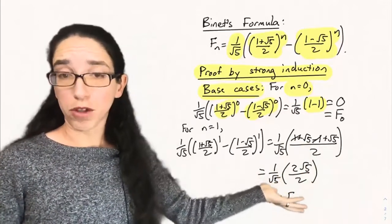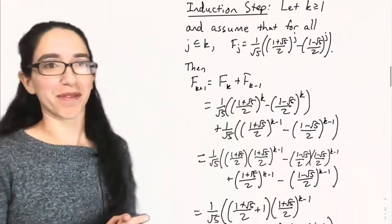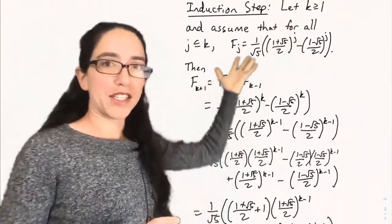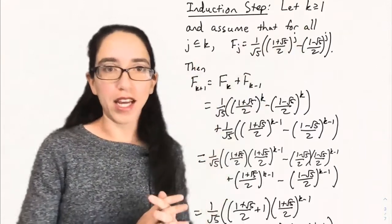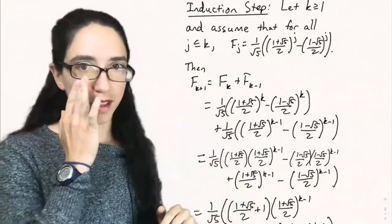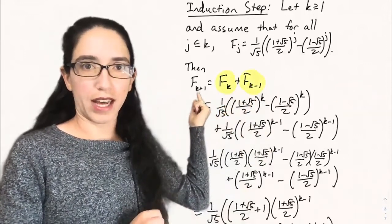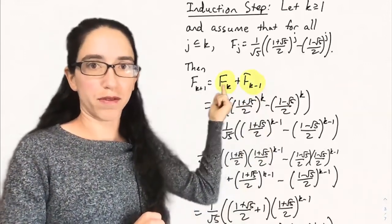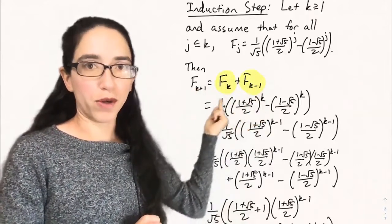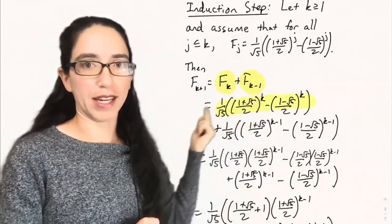So we see the √5s do actually cancel and we get an integer. So why does this hold in general? Let's do the induction step. Now that we have these two base cases, let k be greater than or equal to 1 and assume that for all j between 0 and k, Fⱼ satisfies this formula. This is our strong induction hypothesis. Any Fₖ can be expressed as the sum of the previous two, and by our strong induction assumption, the formula holds for both Fₖ and Fₖ₋₁.